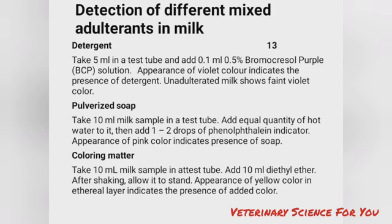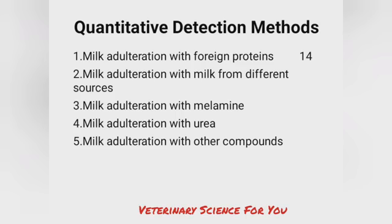Detection of coloring matter — take 10 ml milk sample in a test tube and add 10 ml diethyl ether. After shaking, allow it to stand. Appearance of yellow color in the ethereal layer indicates the presence of added color.